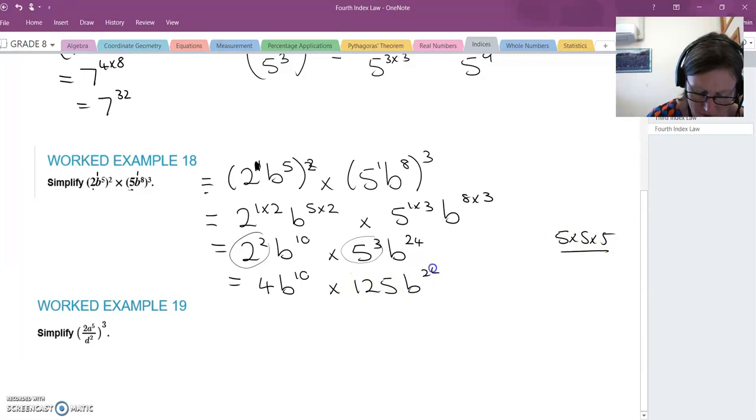Then I get 4 and times it by 125, so 4 times 125 is 500. Now these bases are the same. Index law 1, bases are the same and it's times, you add the indices, so it's 500b to the 34.